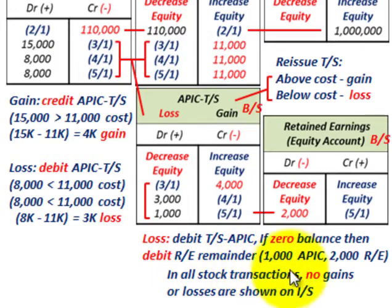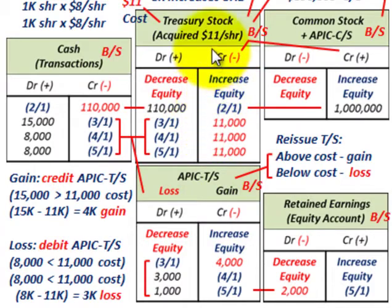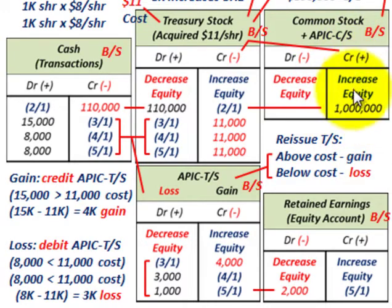In all stock transactions, no gains or losses are shown on the income statement. Everything transpires in our equity accounts — the contra equity accounts for treasury stock and our additional paid-in capital. We started out with common stock credited for a million dollars, increasing our equity.